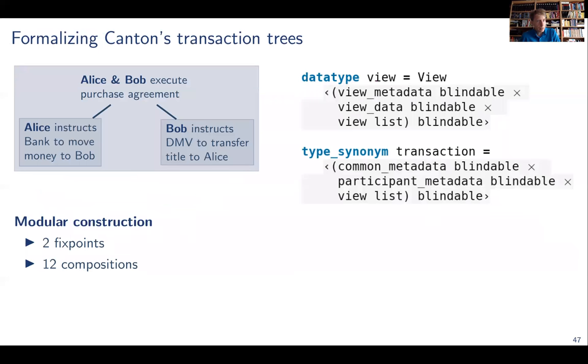For Canton, the transaction tree that you see on the left, well, every gray box corresponds to a view, which we formalized here on the right, which contains some metadata and some actual data, both blindable and a list of sub views. So it doesn't need to be a binary tree, an arbitrary branching tree. And that is one data structure. And then there's more transaction metadata packed around the list of views, which then gives us a transaction structure. So this is how we formalize Canton transaction trees.